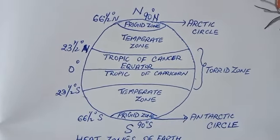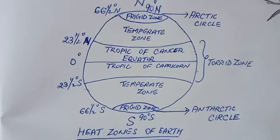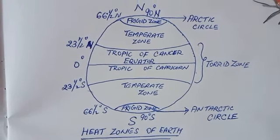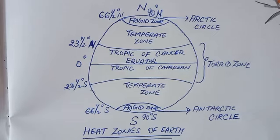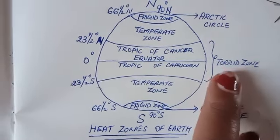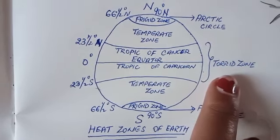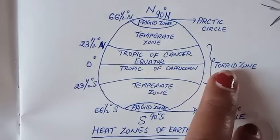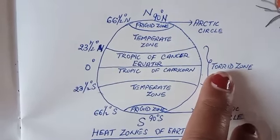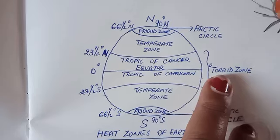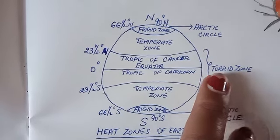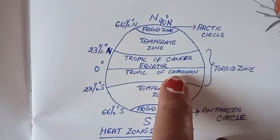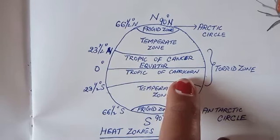Hope this video will be helpful to know the degrees of the zones of earth. One more thing I want to discuss here — at the torrid zone we feel much more heat. As we all know, the Africa continent is present near the equator only, in the torrid zone only.